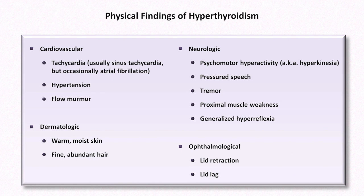From a statistical standpoint, the physical exam is more helpful in either ruling in or ruling out hyperthyroidism than it is in hypothyroidism. The vast majority of hyperthyroid patients have palpable thyroid glands, so a normal gland size on exam argues strongly against the diagnosis. Tremor and tachycardia are also relatively consistent findings whose absence would argue against the diagnosis. The findings most specific for hyperthyroidism — and which argue most in favor of it — are lid retraction and lid lag.